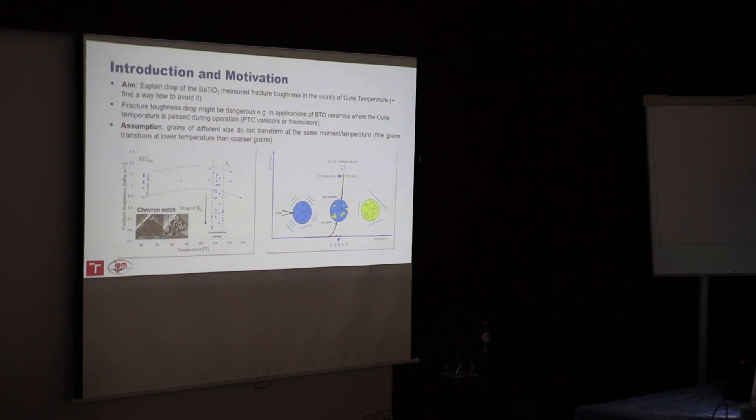So we wanted to explain why this happens. One of our assumptions was that the grains of different size do not transform at the same time. This means that we have non-uniform distribution of grains inside this microstructure. There will be a certain moment mismatch in the thermal strains between adjacent grains, which might be responsible for the development or for this fracture toughness drop.